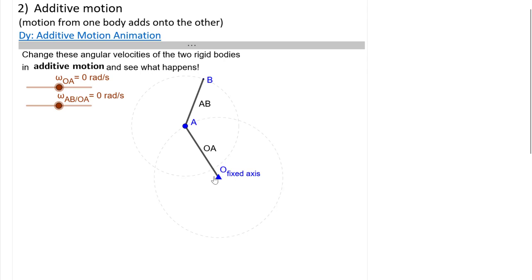So an additive motion case, you'll notice that only one end here at point O is a fixed axis. So essentially only one end is constrained, then there's a body basically moving around that in fixed axis rotation, and then you have another body which is moving relative to or basically additive to the original body. I've got a couple sliders set up: one for the angular velocity of OA and another for the angular velocity of AB relative to body OA, fundamentally relative to point A.